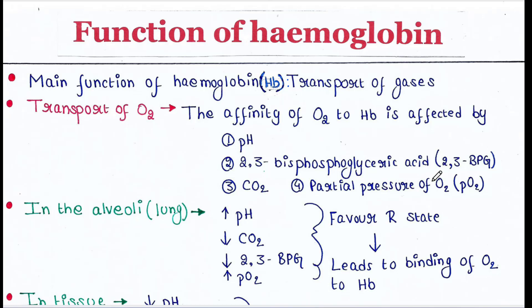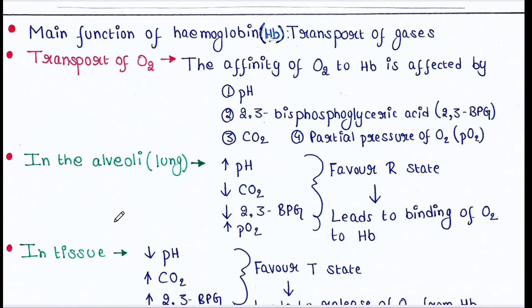Let's see what happens in the alveoli, that is, in the lung. In the lung, the pH is high, the concentration of CO2 is low, the concentration of 2,3-BPG is low, and the partial pressure of oxygen is high. These conditions favor the R state, which leads to binding of oxygen to hemoglobin.